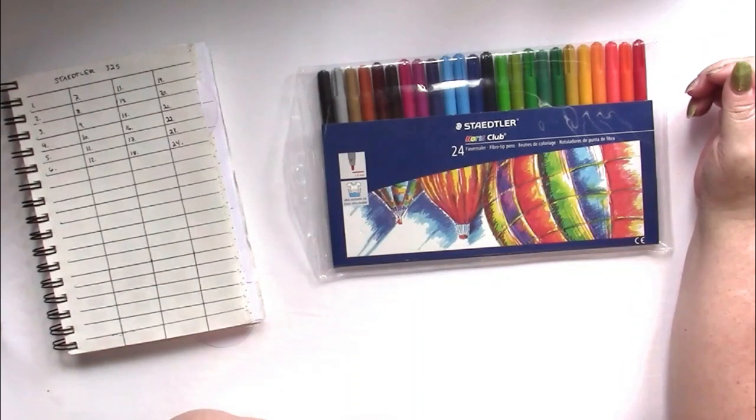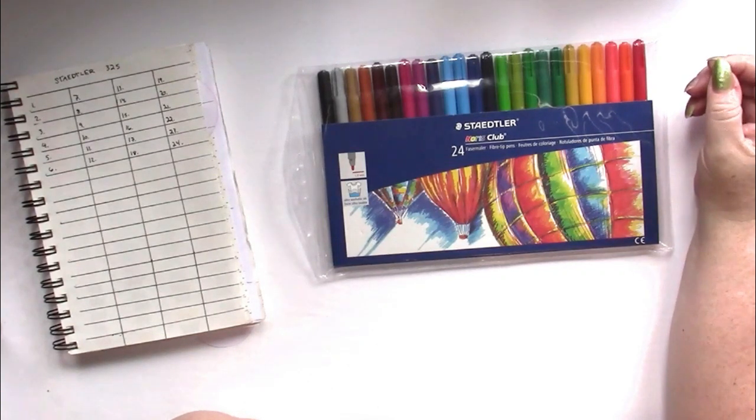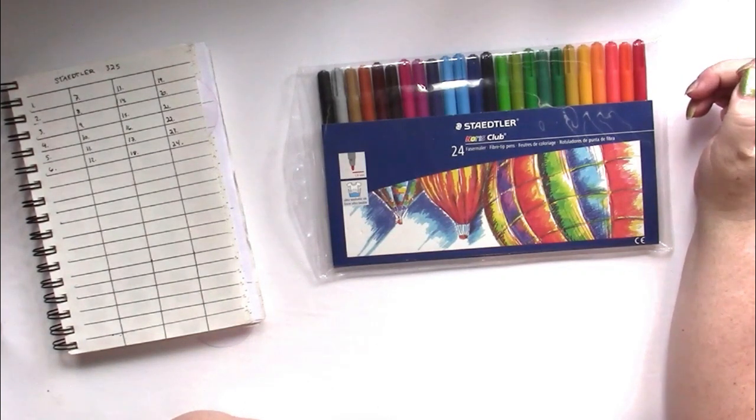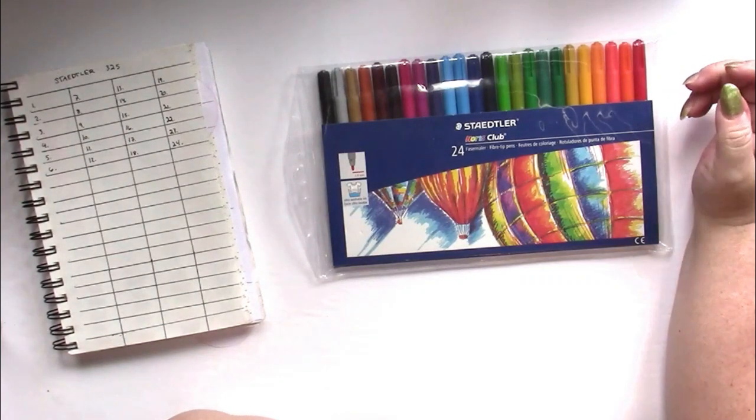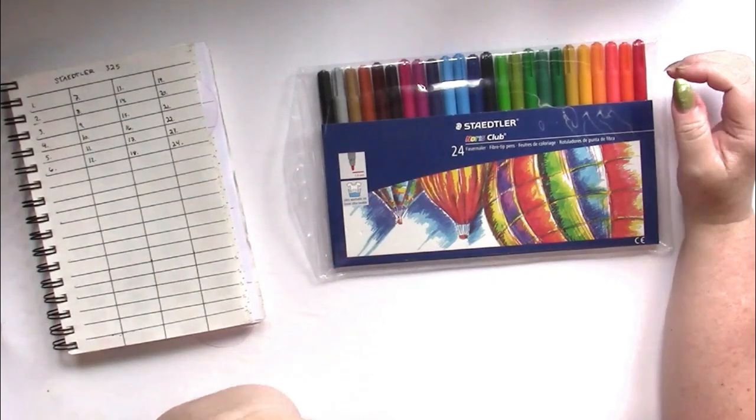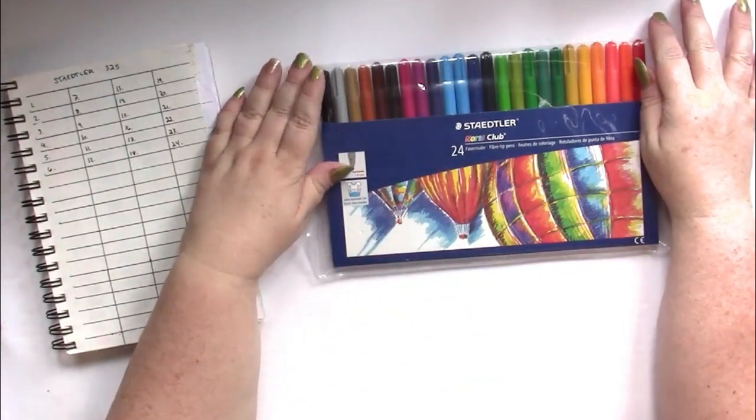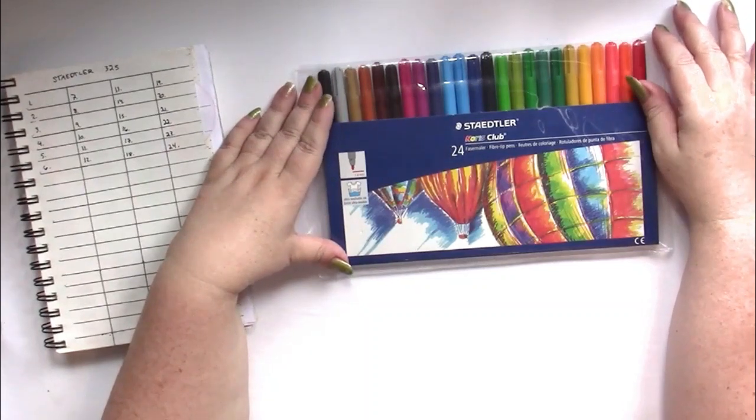Right now my favorite sets of markers are the Staedtler 320s and the Crayola super tips. So today what we're going to have a look at is the Staedtler 325s.